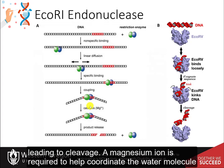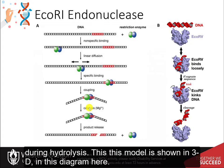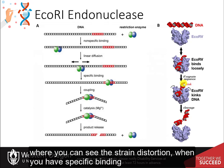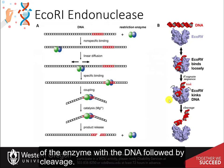A magnesium ion is required to help coordinate the water molecule during hydrolysis. This model is shown in 3D in this diagram here, where you can see the strain distortion when you have specific binding of the enzyme with the DNA, followed by cleavage.